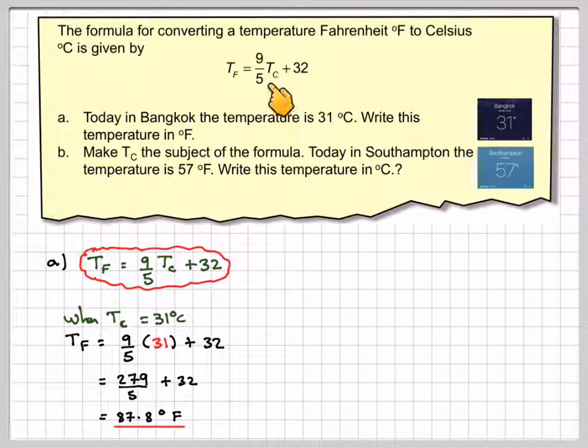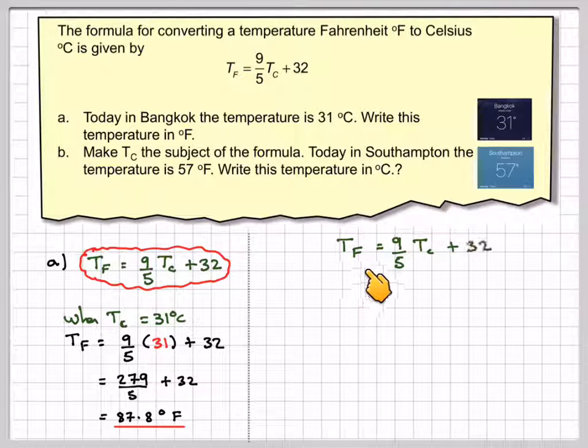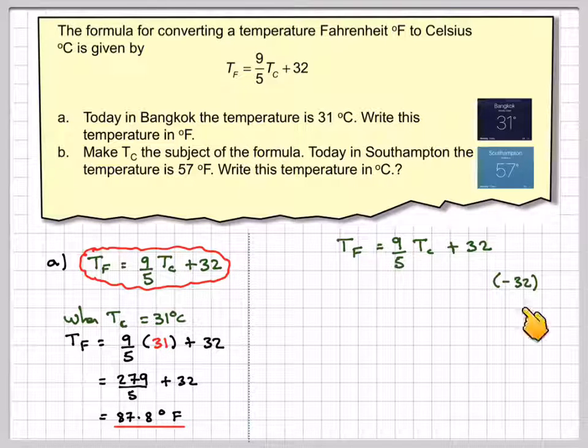Now I need to make Tc the subject of this formula. Write down the formula first: Tf is 9 fifths Tc plus 32. Changing the subject of a formula is about keeping balance. It's the same sort of algebra. First thing we need to deal with is the plus 32. The opposite of adding 32 is to take away 32.